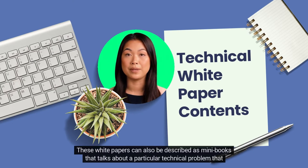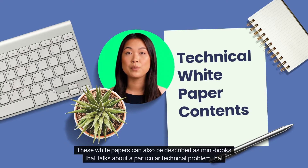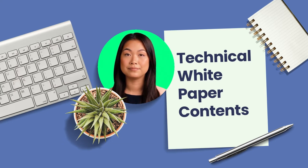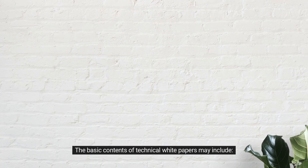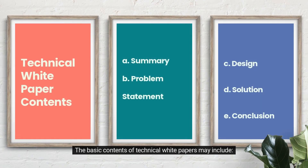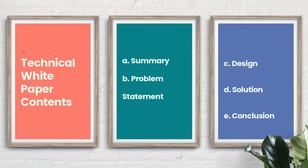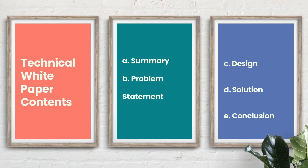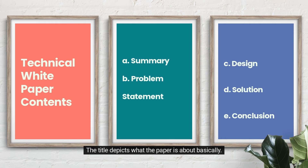These white papers can also be described as minibooks that talk about a particular technical problem that customers are facing while using a product, followed by different ways to solve it. The basic contents of technical white papers may include a cover page at the beginning. This page consists of the title of the paper, mentioned and designed attractively, along with the company name and logo. The title depicts what the paper is about.